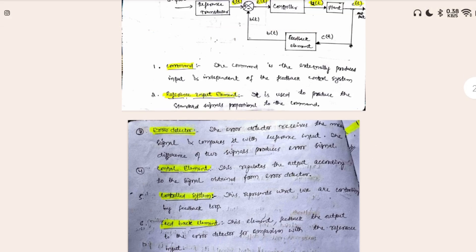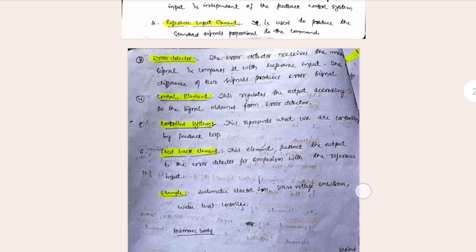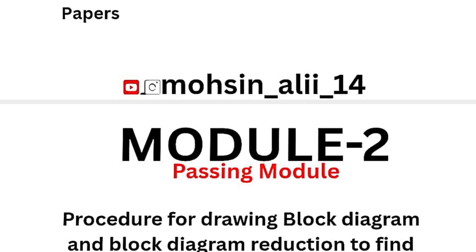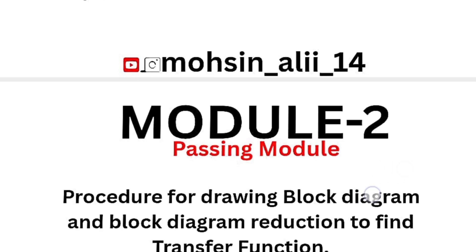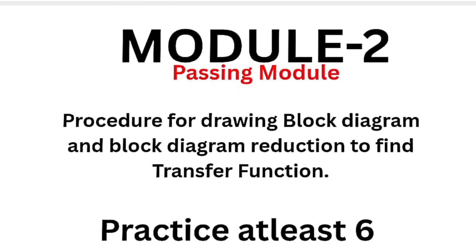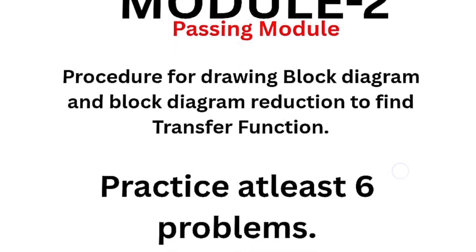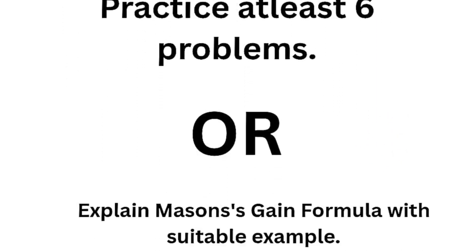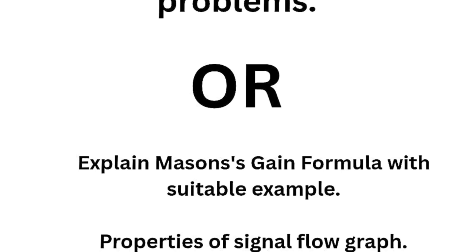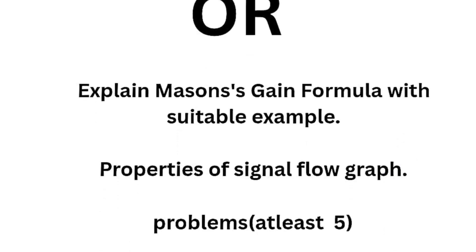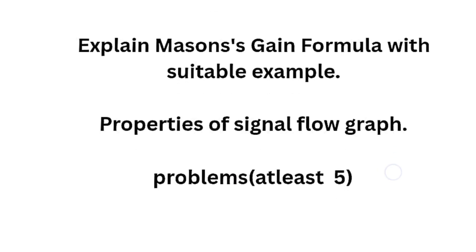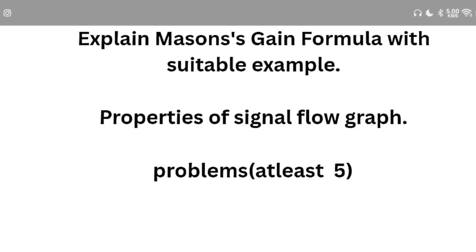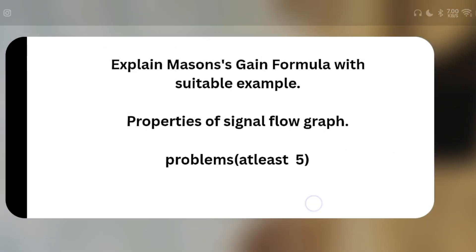Coming to module two, which is again a passing module. You have to go through the procedure for drawing block diagrams and block diagram reduction to find the transfer function — practice at least six problems. You can also go through Mason's gain formula with a suitable example, the properties of signal flow graphs, and practice at least five problems there.